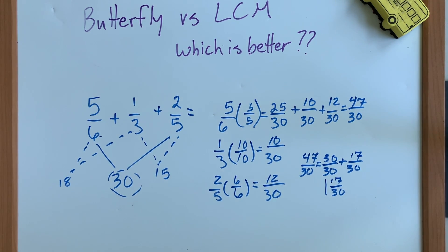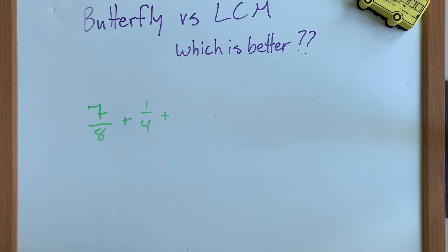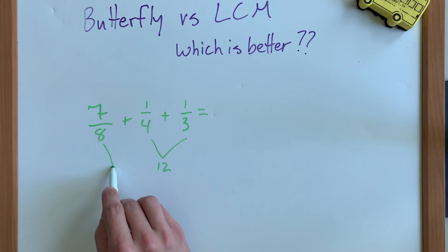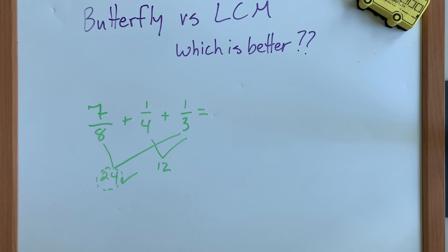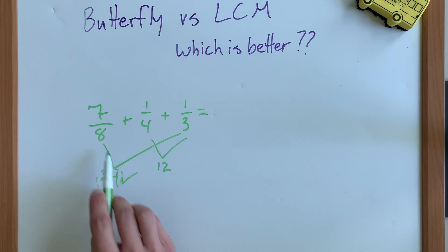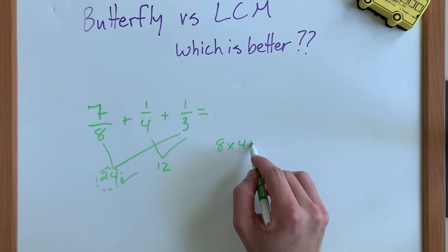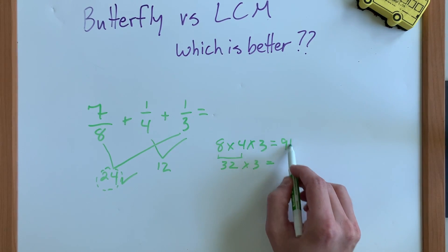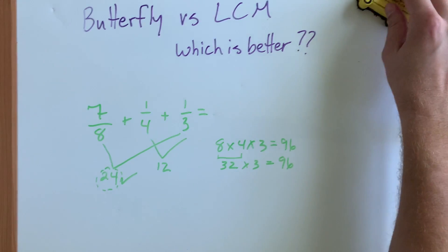Let's take a look at a third example: seven over eight plus one over four plus one over three. Let's check some combinations quickly. Three times four is twelve, and eight doesn't go into that. Eight times three is twenty-four — does four go into twenty-four? Yes, it does. That means twenty-four is going to work as a common denominator. Since we found something that works by checking two of the denominators, we can do this problem using LCM with much smaller numbers. The butterfly method would give us a denominator of eight times four times three, which is ninety-six — much bigger than what we need.